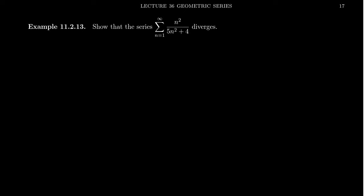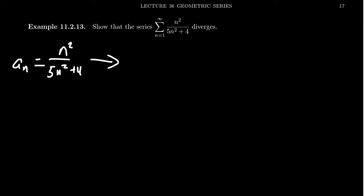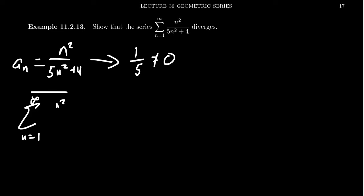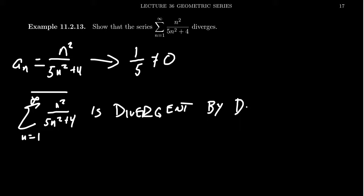Let's illustrate this with an example. Let's show that the series from n equals 1 to infinity of n squared over 5n squared plus 4 diverges. Consider the sequence — not the sum, but the sequence — n squared over 5n squared plus 4. If you take the limit as n goes to infinity, since this is a balanced rational function with n squared on top and bottom, you get 1/5 as the limit. But 1/5 is not 0, so this sequence does not converge to 0. Therefore, the series from n equals 1 to infinity of n squared over 5n squared plus 4 is divergent by the divergence test.